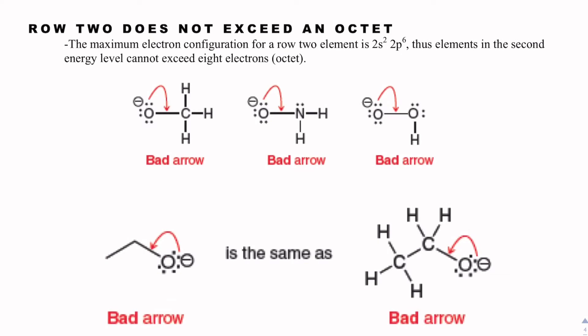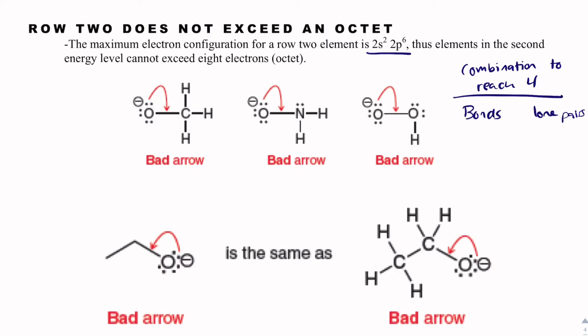Rule two: row two elements do not exceed an octet. Row two elements have 2s² 2p⁶, so we can't have more than eight electrons. That means we need a combination of four — bonds and lone pairs, each having two electrons, multiplying to eight. We could have four bonds with zero lone pairs, three bonds with one lone pair, two bonds with two lone pairs, or one bond with three lone pairs. All of these are acceptable.